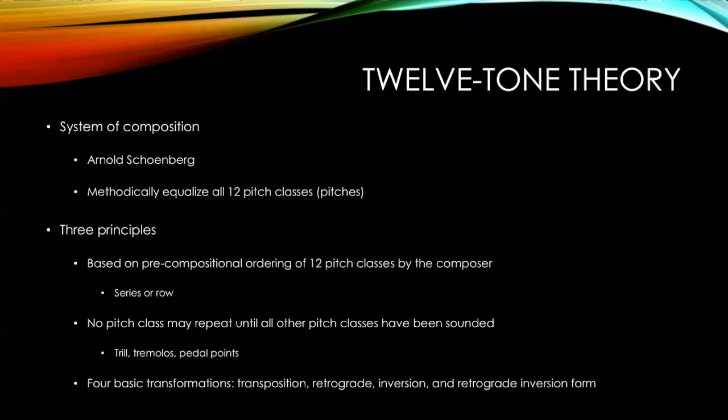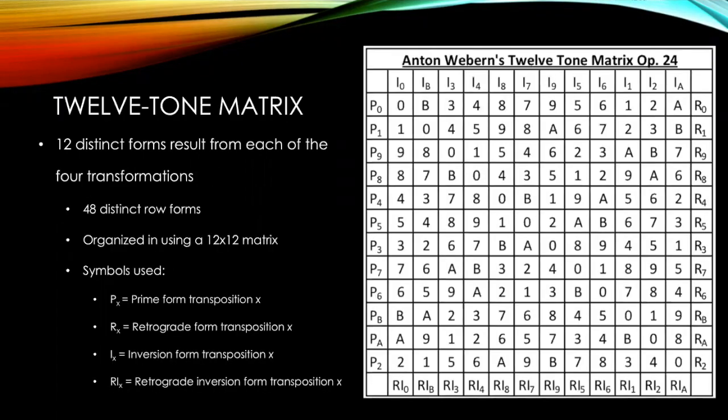Third, there are four basic transformations the initial tone row can undergo. First, transposition—there are 11 transpositions of the prime tone row. Additionally, it can undergo retrograde, which is the reverse order of all 12 transpositions. It can also undergo inversion, which is the mirroring of each interval of each of the 12 transpositions. Finally, the tone row can undergo retrograde inversion, which is the reversed order of each of the 12 inversions. As mentioned, 12 distinct forms result from each of the four different transformations, resulting in 48 distinct row forms.